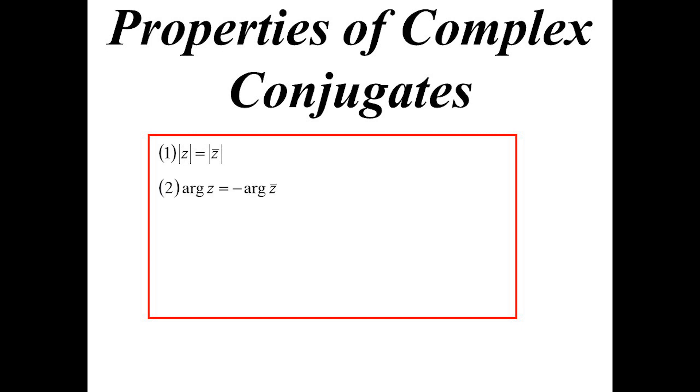The arguments, however, will be the negative of each other, again because of that reflection in the x-axis. Now, zz conjugate, there's a much neater way of describing that. We can simply say it's the modulus squared. Remember, the modulus is the square root of x squared plus y squared.